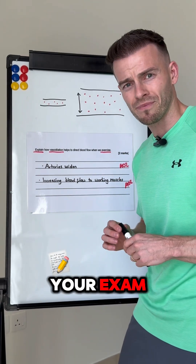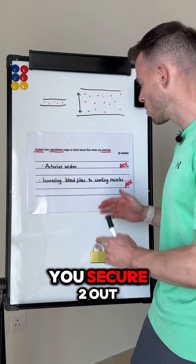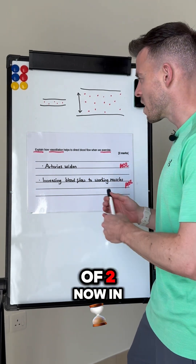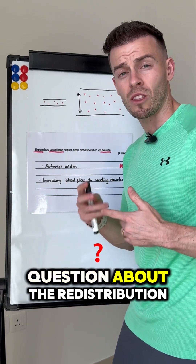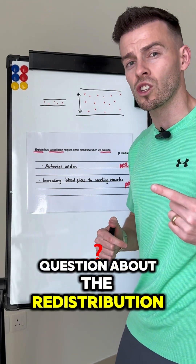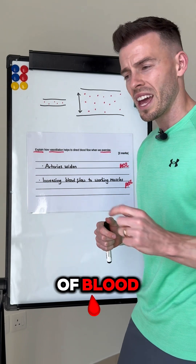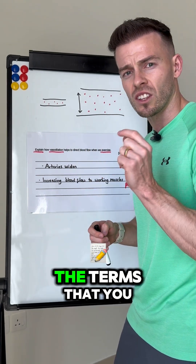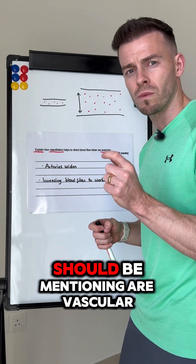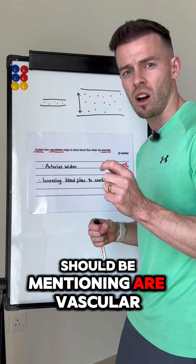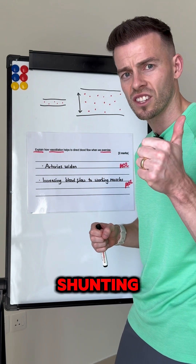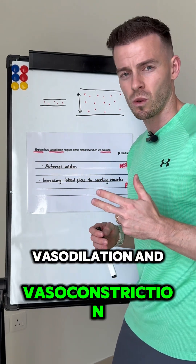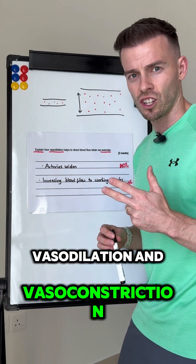Write that down in your exam and you secure two out of two. In your exam, you might also have a question about the redistribution of blood. If you were to have that question going forwards, the terms you should be mentioning are vascular shunting, vasodilation, and vasoconstriction.